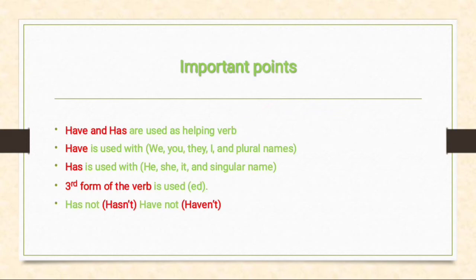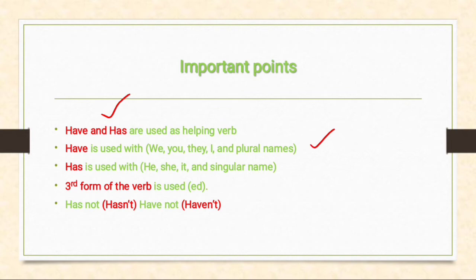Important points of present perfect tense: 'have' and 'has' are used as helping verbs. Every tense has its own helping verb — present indefinite tense uses 'do/does', present continuous tense uses 'is/are/am'. Present perfect tense helping verb is 'have' and 'has'. 'Have' is used with the subjects: we, you, they, I, and plural names. 'Has' is used with: he, she, it, and singular names.